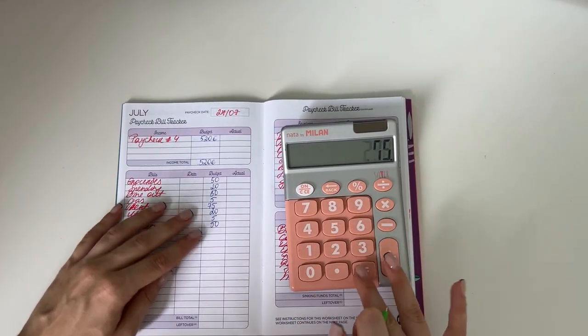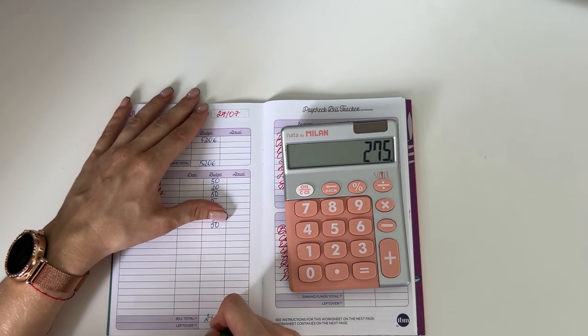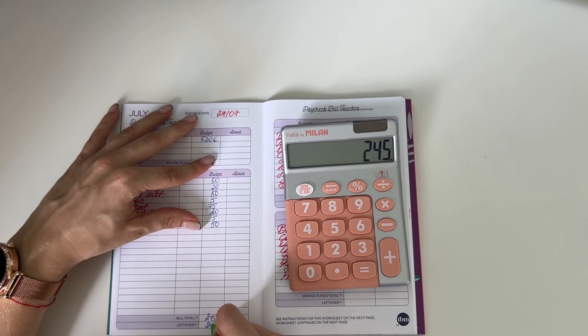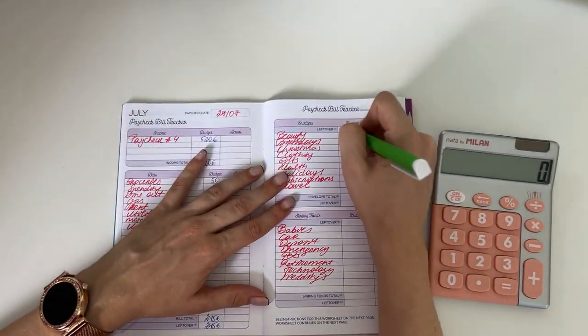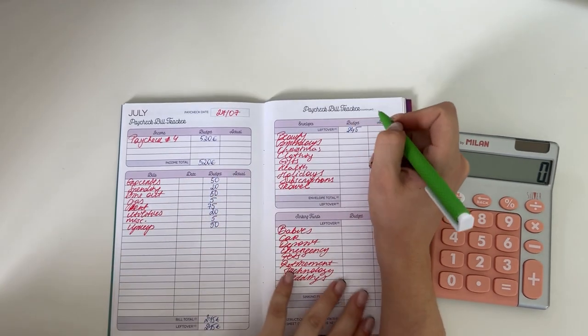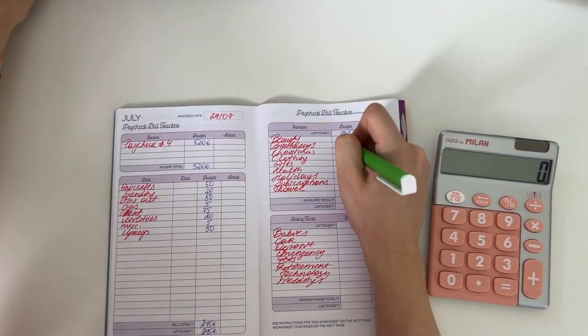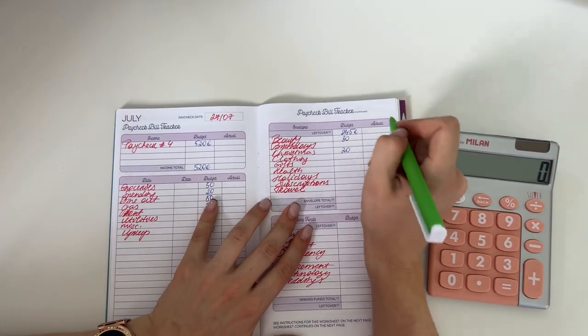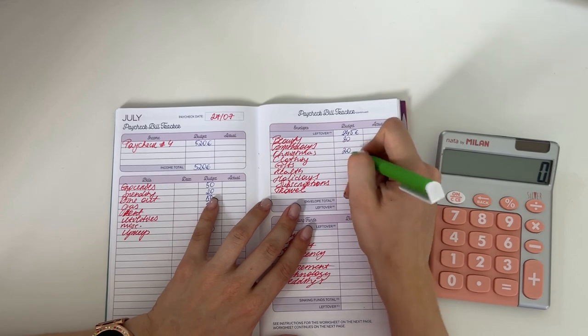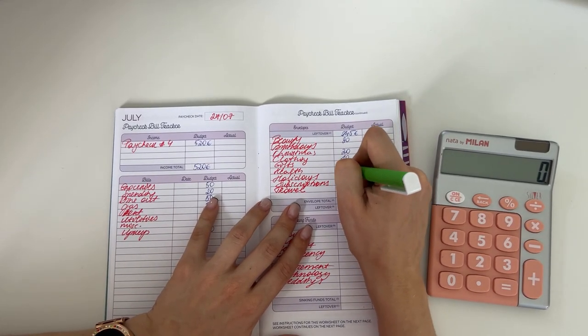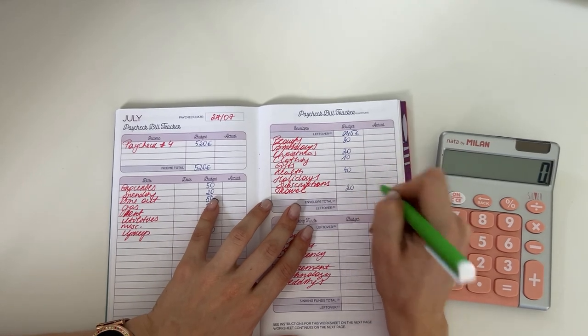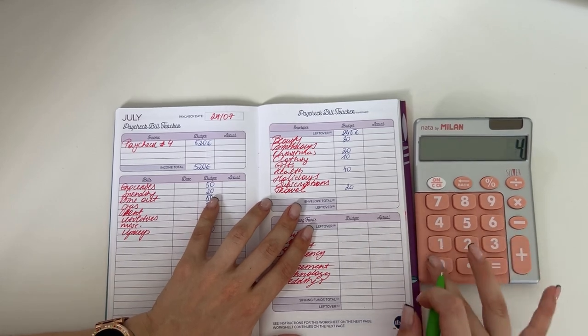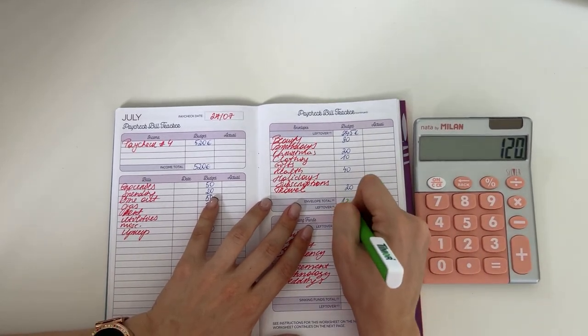520 minus 275 is 245, so we're bringing that 245 here to short-term sinking funds. We're going to put 30 into beauty, 20 into Christmas - we're not stopping birthdays anymore because we're fully done for those for this year - 10 into clothing, 40 into health, and 20 into travel. That's 120 in short-term sinking funds.